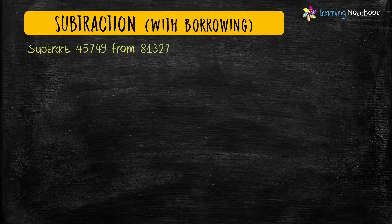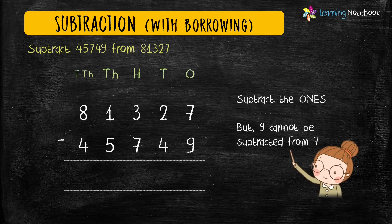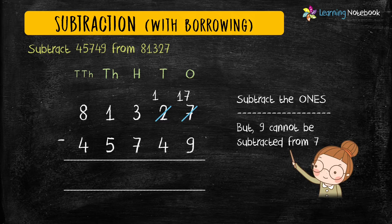Now let's do the next question: subtract 45,749 from 81,327. To subtract these five-digit numbers, let's write them in columns. Now subtract the digits at the one's place. But 9 cannot be subtracted from 7, so we will borrow from the tens place. 2 becomes 1 and 7 becomes 17. Now 17 minus 9 equals 8.